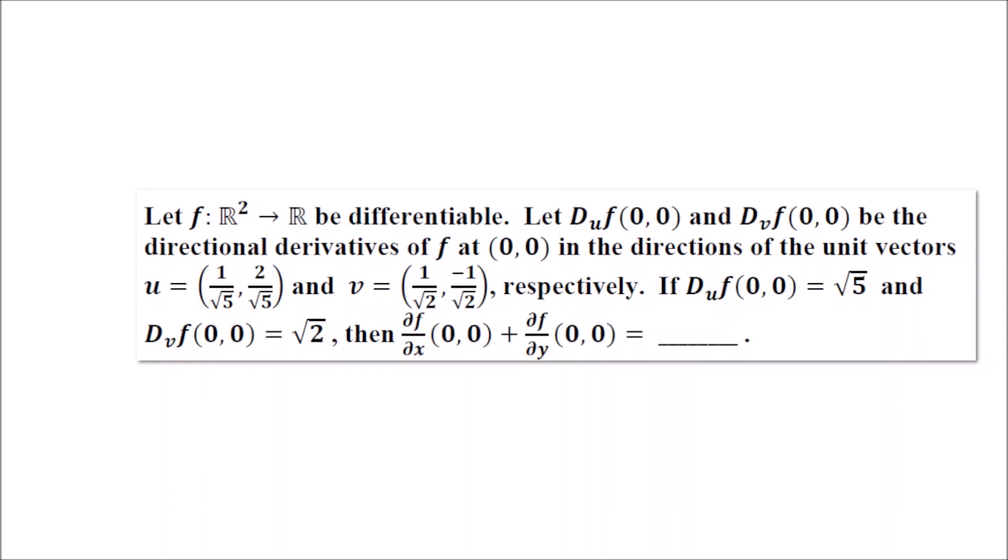And what are the directions? u is (1/√5, 2/√5) and v is (1/√2, -1/√2). You have to find ∂f/∂x at (0,0) plus ∂f/∂y at (0,0).